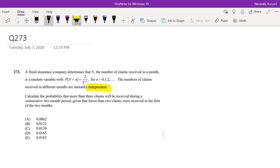Calculate the probability that more than three claims will be received during a consecutive two month period. So that's two months period, but they give you what it is in a month. Given that fewer than two claims were received in the first of the two months.